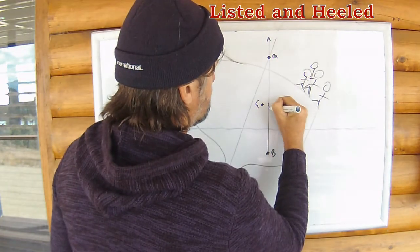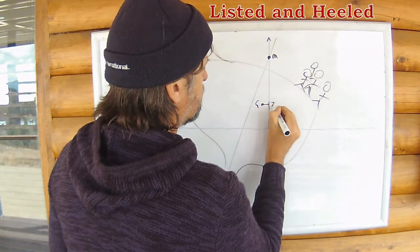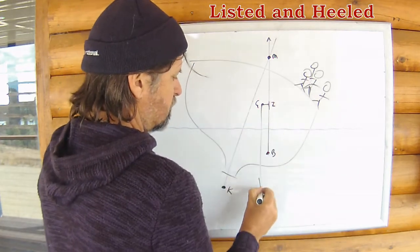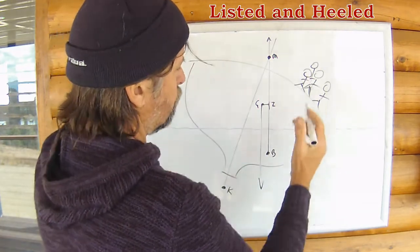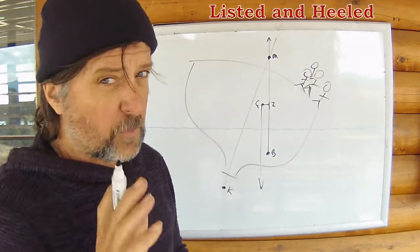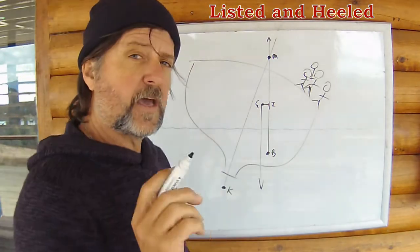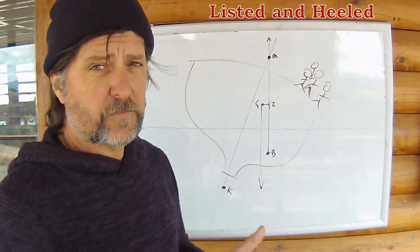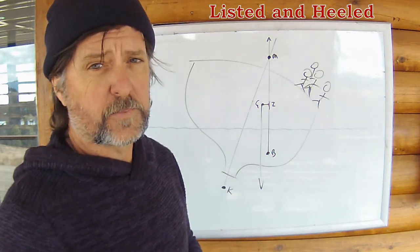But do we not have a bit of a GZ lever? G acting down, B acting up, wanting to bring the vessel not back upright, but back to the angle of list. So yes, a vessel can be listed and heeled at the same time.